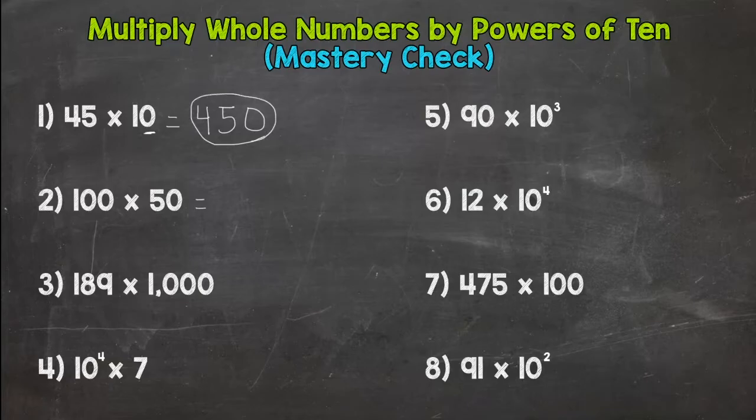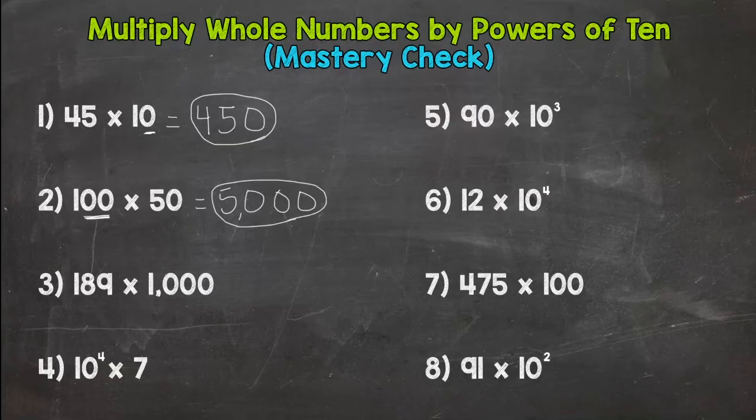Number two, we have 50 times 100, or 100 times 50. It doesn't matter if your power of 10 comes first or second. So we have a 50 and then we need to put an additional two zeros on the end to get everything to the correct place value. 5,000 for number two.